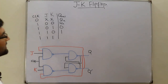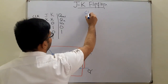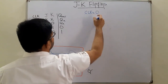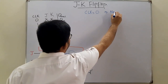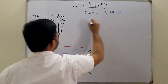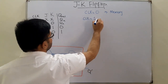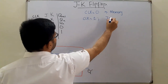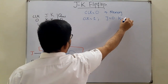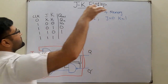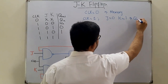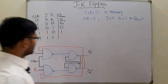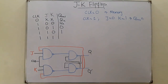Let's go through some cases. When the clock is zero, Q-n-plus-one is the memory state. When the clock is one and both J and K are zero, that is again the memory state. When J is zero and K is one, Q-n-plus-one would be zero.